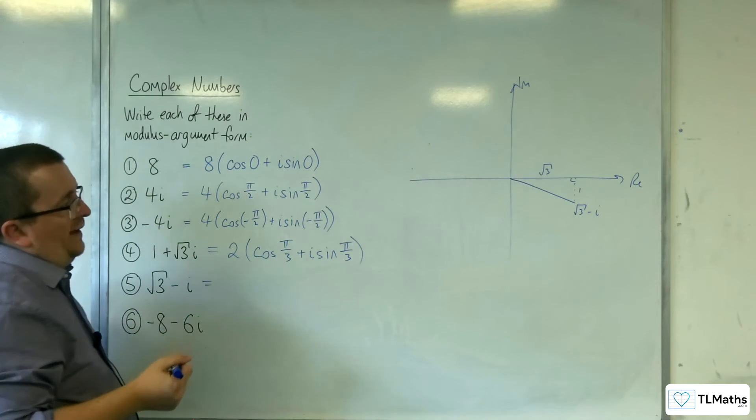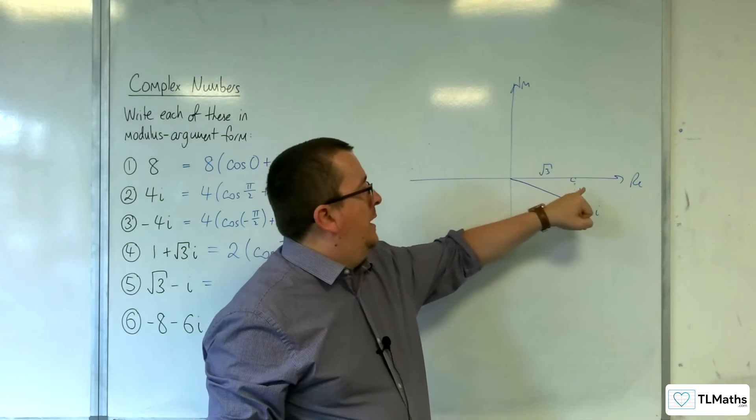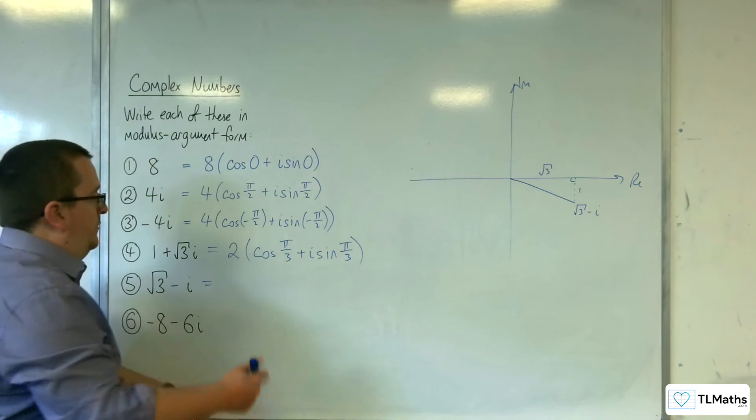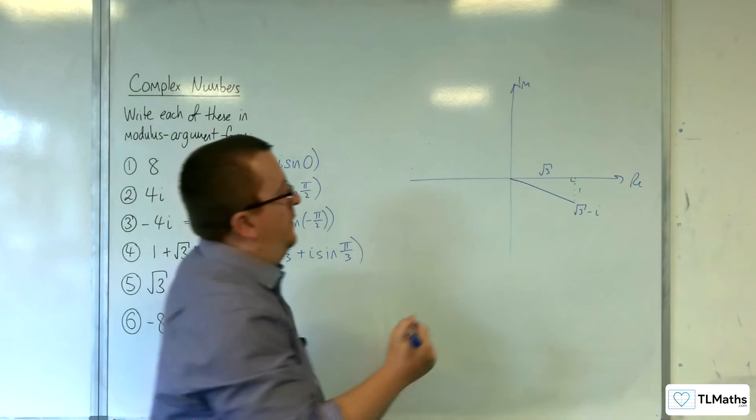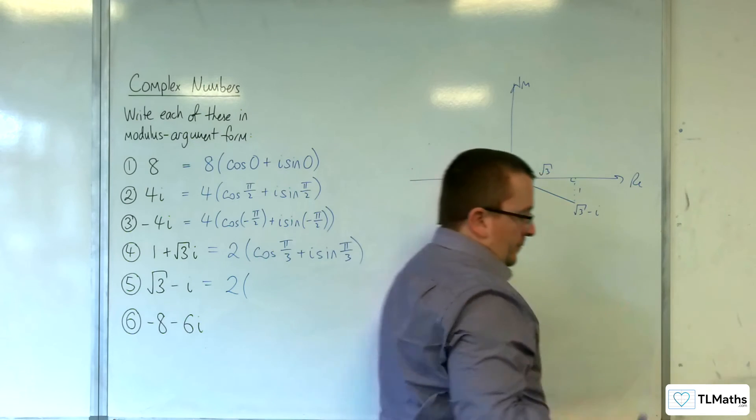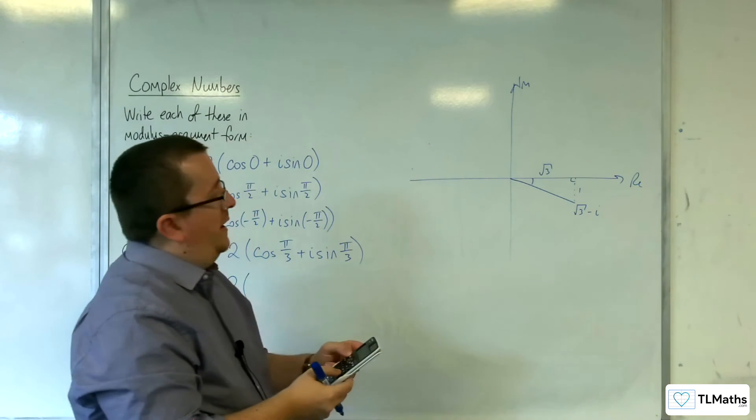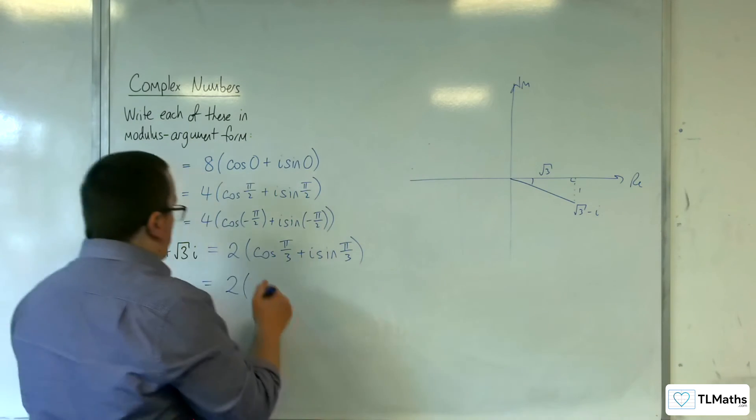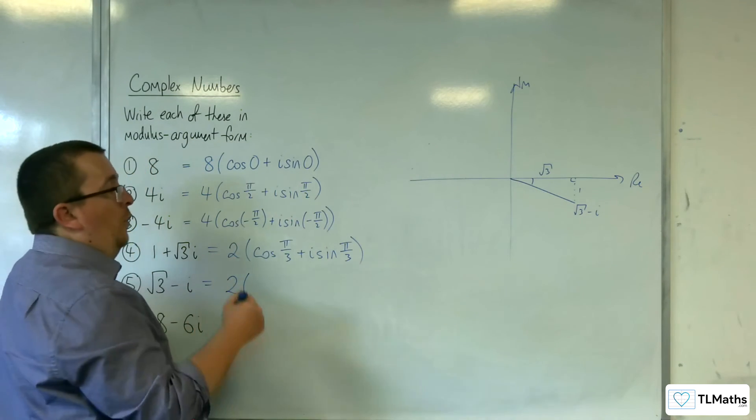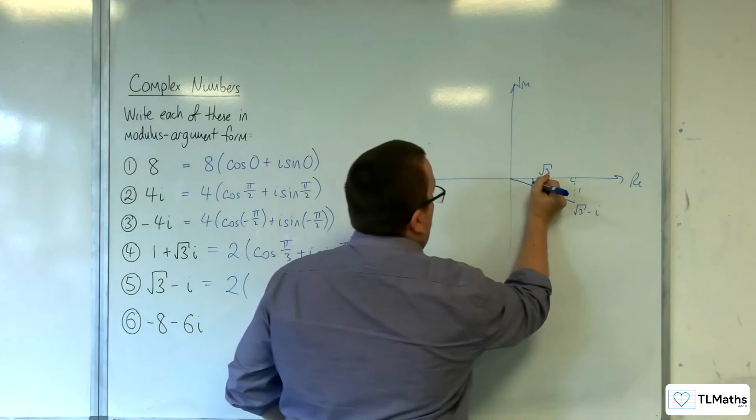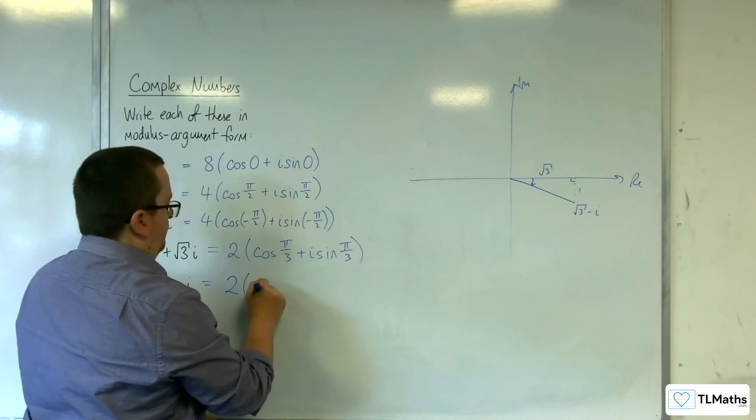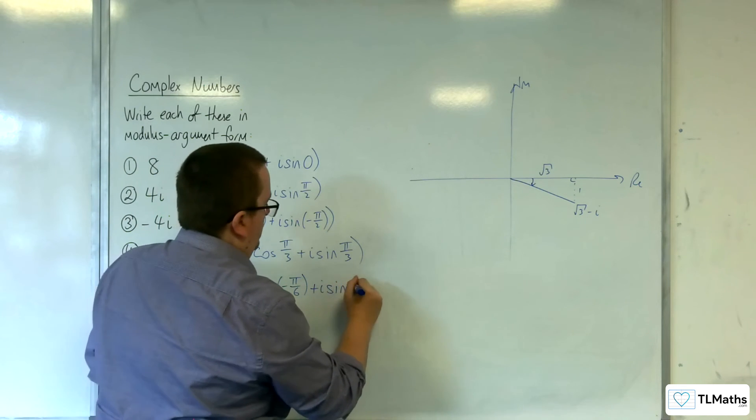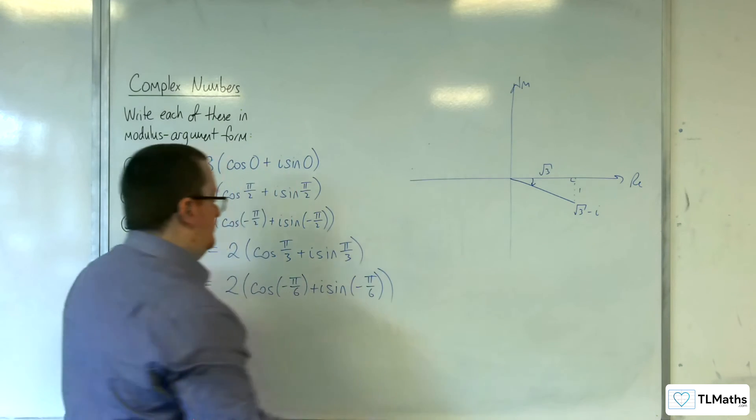Its length, once again, is the square root of 1 squared plus √3 squared, so square root of that is 2. And this angle here is the inverse tan of 1 over √3, so that's π over 6. So it's 2 cosine of minus π over 6, because we're below the real axis, plus i sine of minus π over 6.